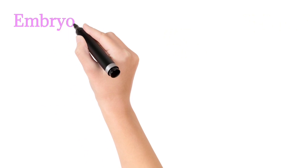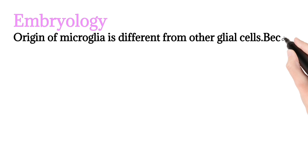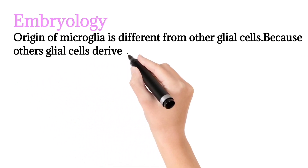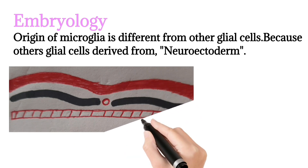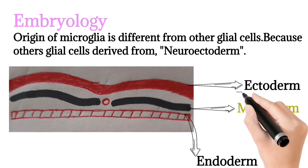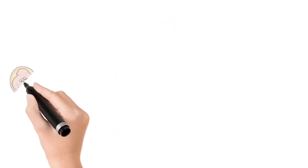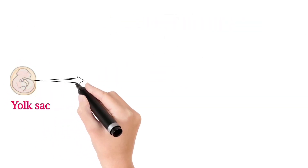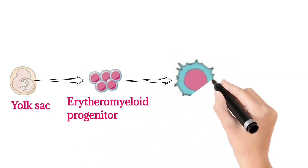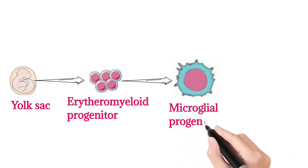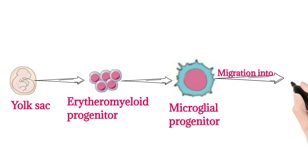The origin of microglia is different from other glial cells. Other glial cells derive from the neuroectoderm, whereas microglia originate from mesoderm. First, the yolk sac differentiates into erythromyeloid progenitors, which then convert into microglial progenitors, and from there they migrate to the central nervous system.